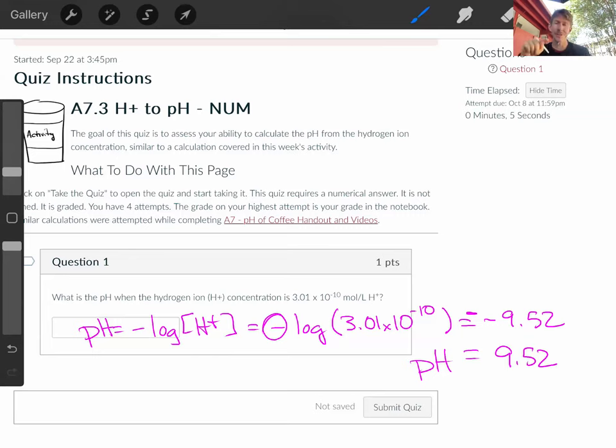On some calculators, you have to hit the log button and then the 3.01 times 10 to the minus 10. If you have any questions, please see me for help.